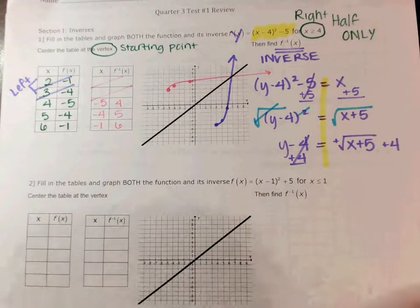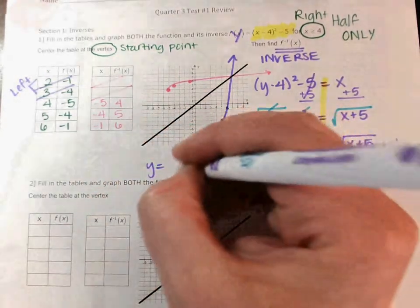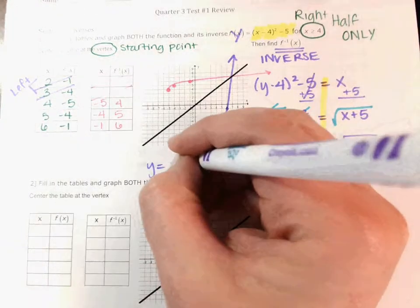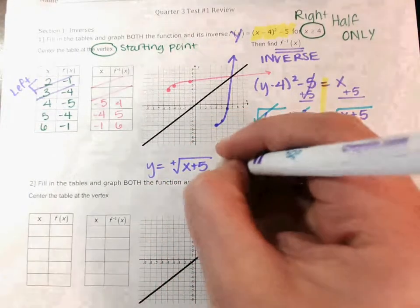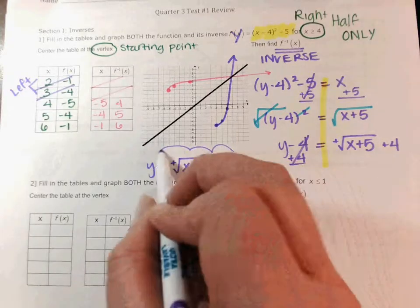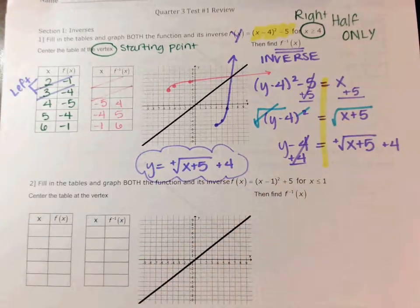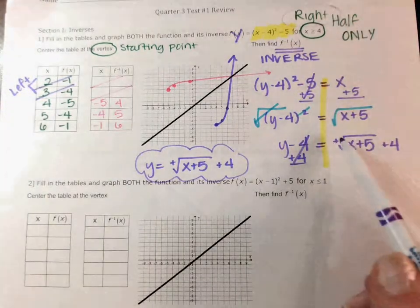Remember that technically you have to pick the plus or the minus on the square root. If this was a right half, which one do I pick? Is the right side the positive or the negative side? The positive side. So I have y minus four equals the positive square root of x plus five. Then my last step — if I have a minus four, I'm going to plus it. Remember, you can't add it to the five because the five is inside and the four is outside.